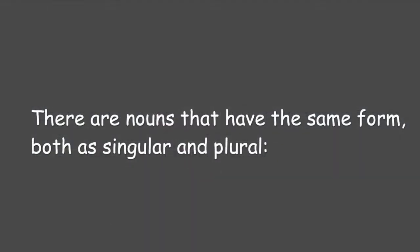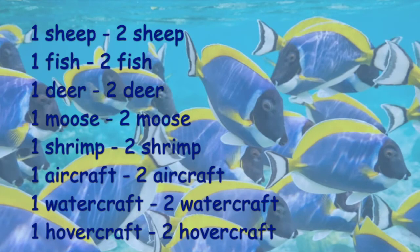There are nouns that have the same form both as singular and plural. One sheep, two sheep; one fish, two fish; one deer, two deer; one moose, two moose; one shrimp, two shrimp; one aircraft, two aircraft; one watercraft, two watercraft; one hovercraft, two hovercraft.